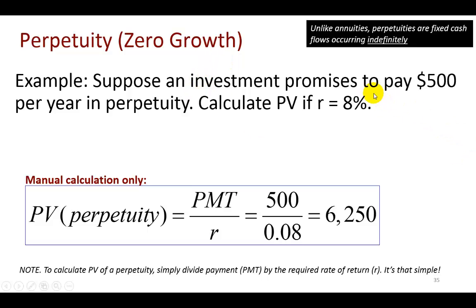So in this example, we wish to calculate present value of a perpetuity that pays $500 per year, and we're going to use 8% as a discount rate. All we got to do is divide the perpetuity payment by the discount rate of 8%. Manual calculation only, nothing more, nothing less. So this comes out to be $6,250. Present value of a cash flow that stays the same indefinitely is always going to be the ratio of that cash flow and the required rate of return.